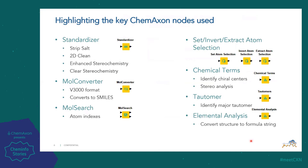Here are the key ChemAxon nodes utilized throughout this entire process. We have the Standardizer, which is used throughout the entire process — for salt stripping, 2D clean, enhanced stereochemistry, and cleaning of the stereochemistry. The Mole Converter is a simple way to convert molecules into V3000 format and also to convert to SMILES for other processing. For the Mole Search, this is how we do atom indexing — quite cleverly used for salts where we set the atom selection, do an inversion and extraction, and this helps us get the salt.